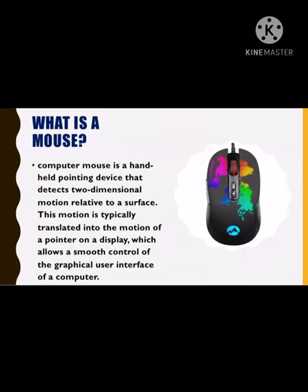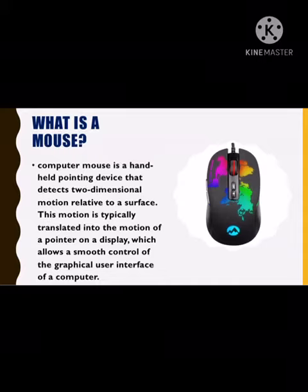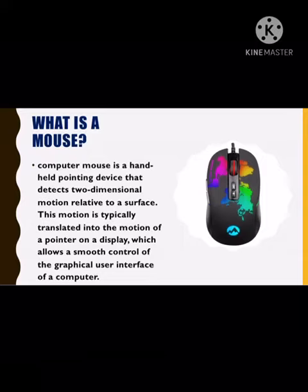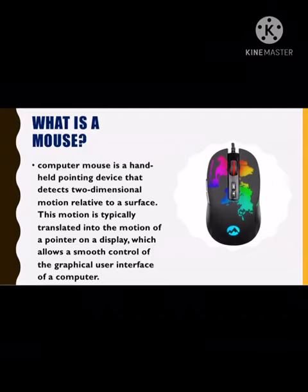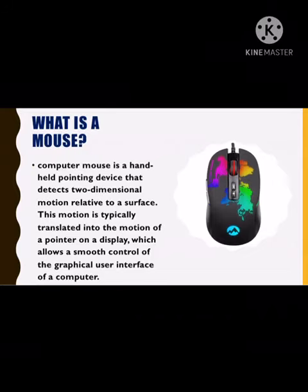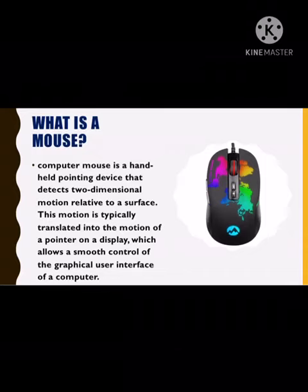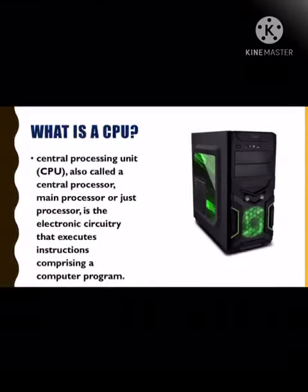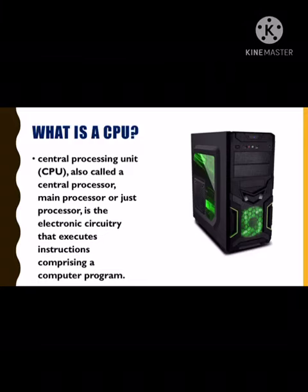What is a mouse? A computer mouse is a handheld pointing device that detects two-dimensional motion relative to a surface. This motion is typically translated into the motion of a pointer on a display, which allows smooth control of the graphical user interface of a computer.